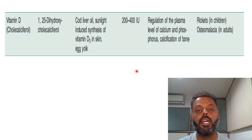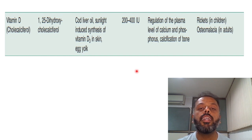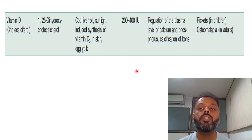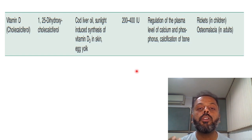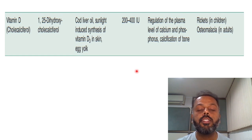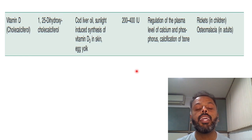Deficiency of vitamin D leads to rickets in children and osteomalacia in adults. The characteristic features of rickets include: weight-bearing bones are affected, leading to bow leg and knock knee; pigeon-like chest; swelling of the costochondral junction, which leads to a rickety rosary; and Harrison's sulcus, which is a transverse depression extending outward from the costal cartilage to the axilla.